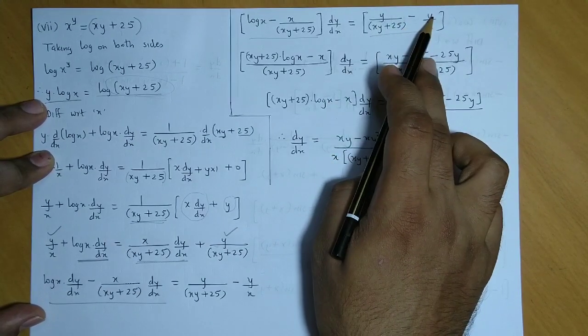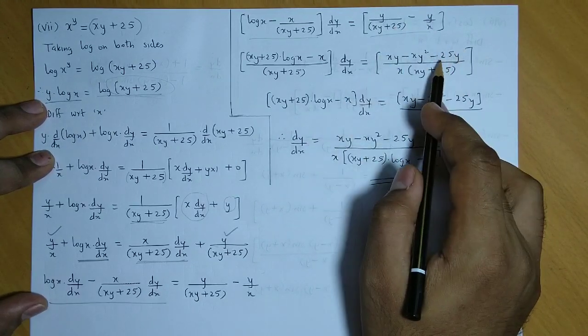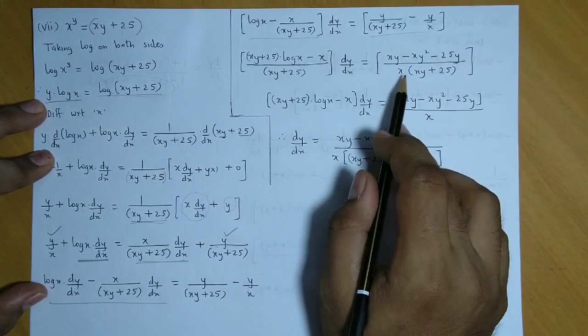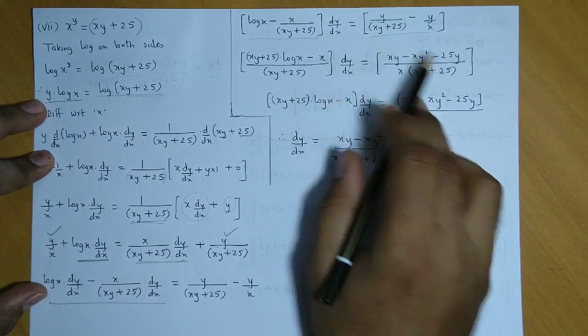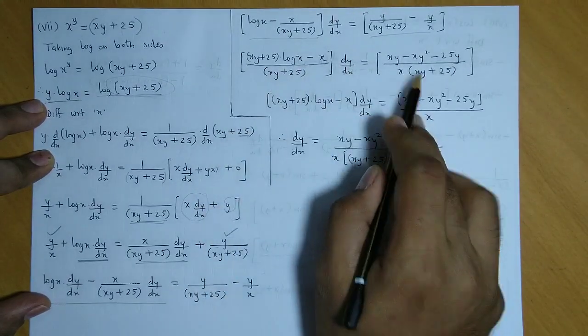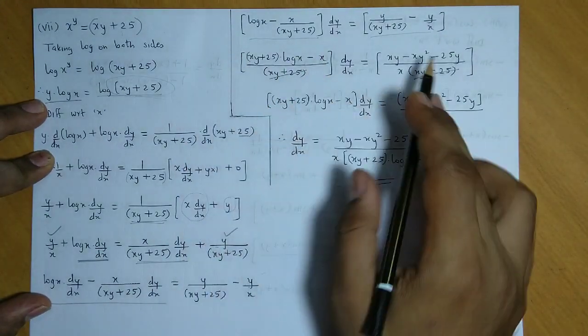So minus y into xy, that is minus xy square, minus y into 25 is minus 25y, and in the denominator we get x and xy plus 25. Now on both sides, denominator has this factor, so we cancel it on both the sides.